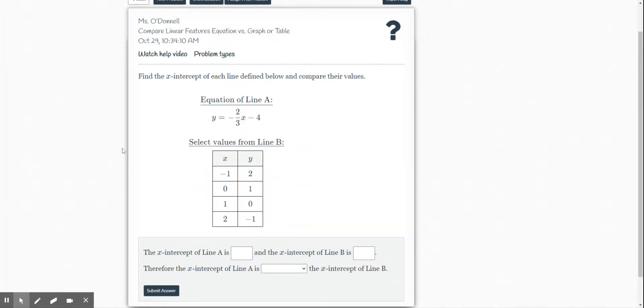So if we're looking at this, it says find the x-intercept of each line defined below and compare their values. So we have to know about our intercepts, right? So we have to remember what is an x-intercept. Well, an x-intercept is where the line is crossing or intersecting with the x-axis. That would be your x-intercept.